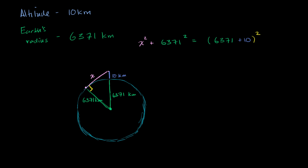And so we get x squared plus 6,371 squared is equal to, what is this going to be? This whole distance right over here is just going to be 6,381 kilometers, and we're going to square that. So x squared, we just subtract 6,371 squared from both sides, we get x squared is equal to 6,381 squared minus 6,371 squared.